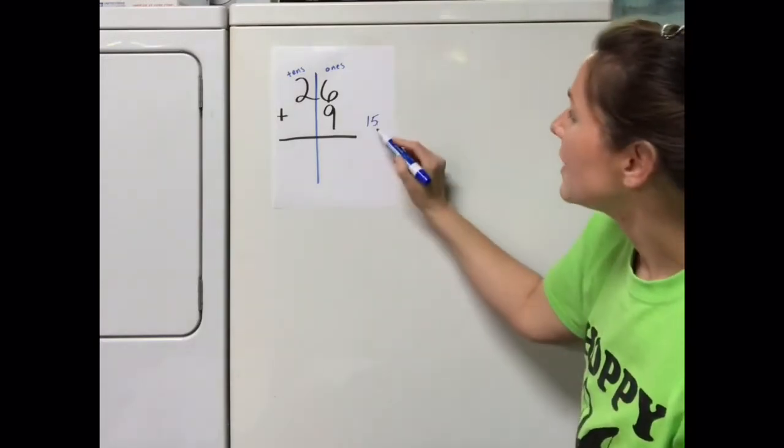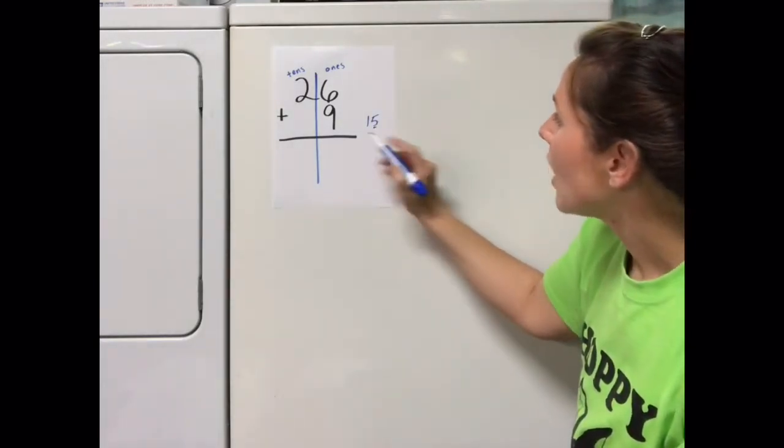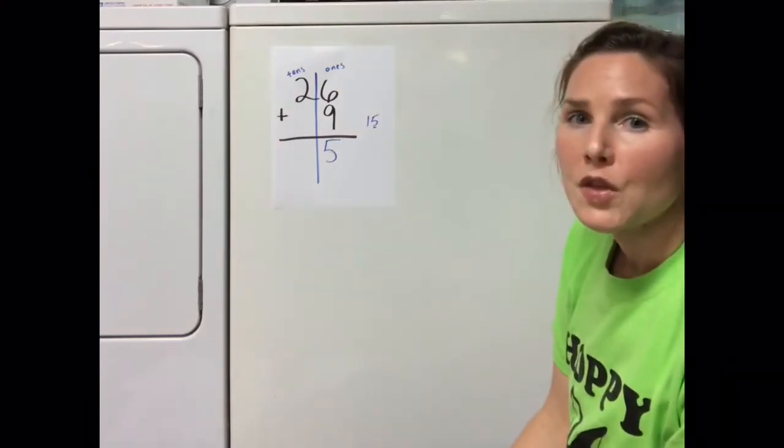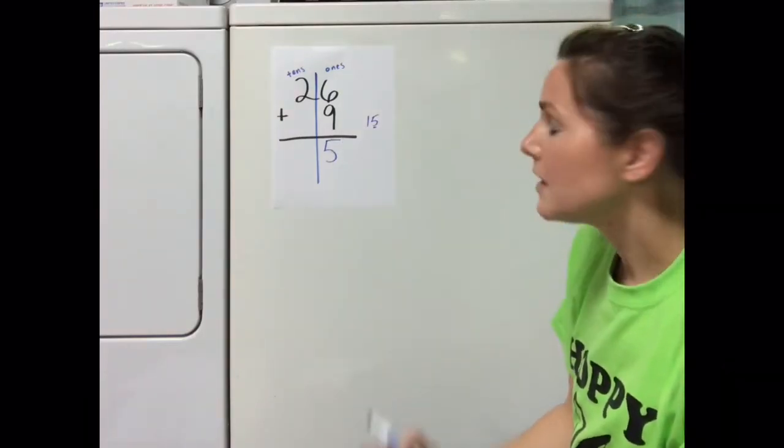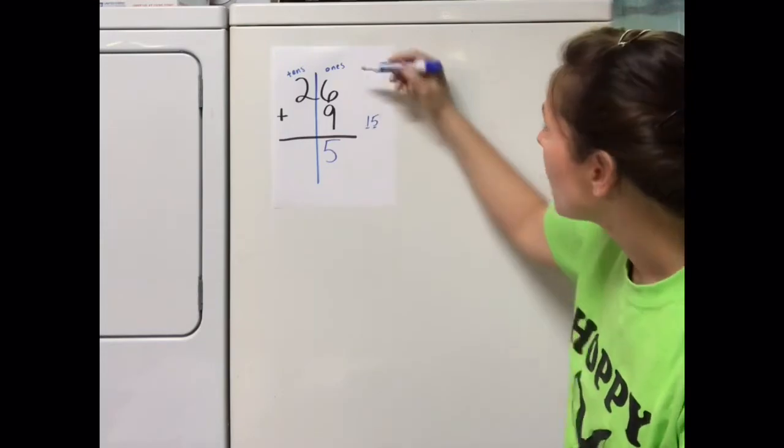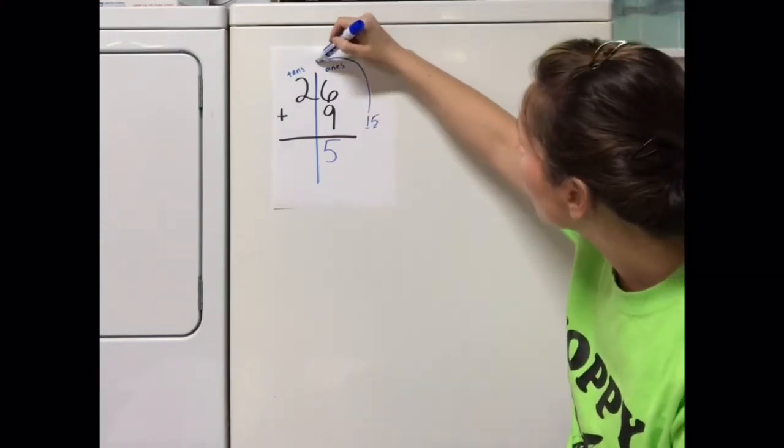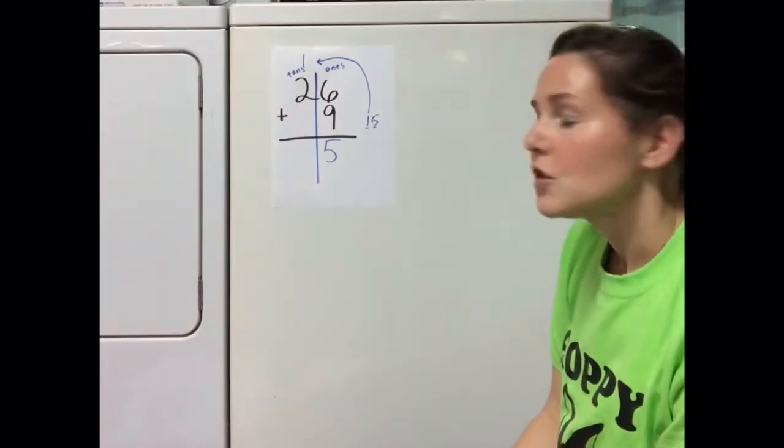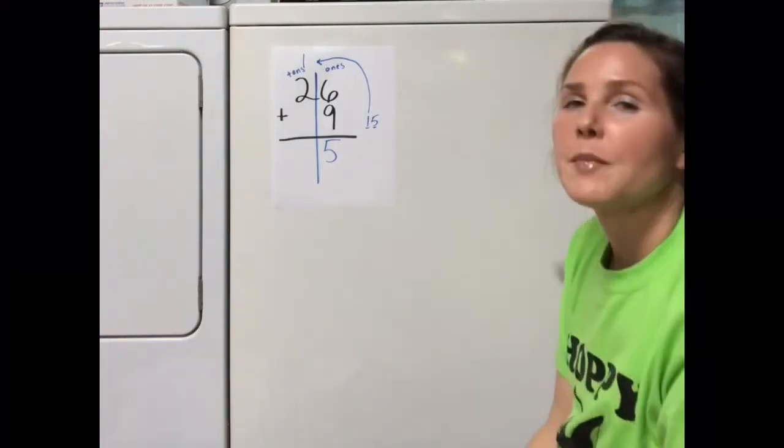The 5 is in the ones place, so I'm going to write that 5 down here. The 1 in the number 15 is in the tens place, so what I'm going to do is I'm going to write that one up here on top of the tens column.